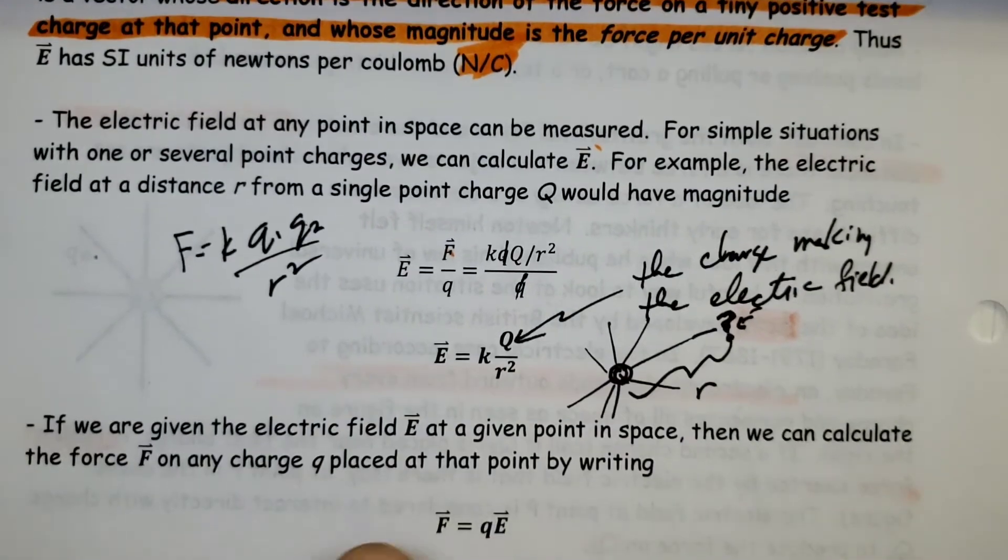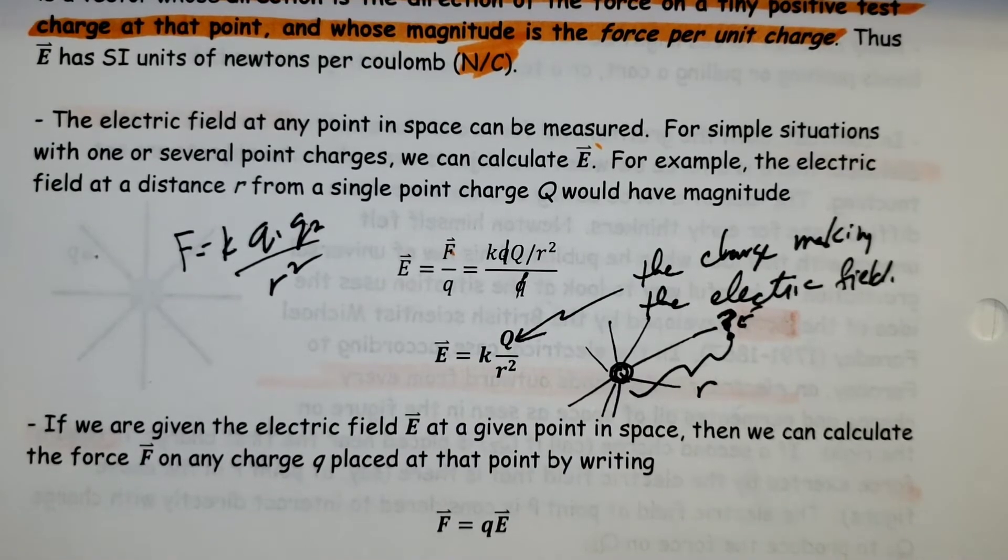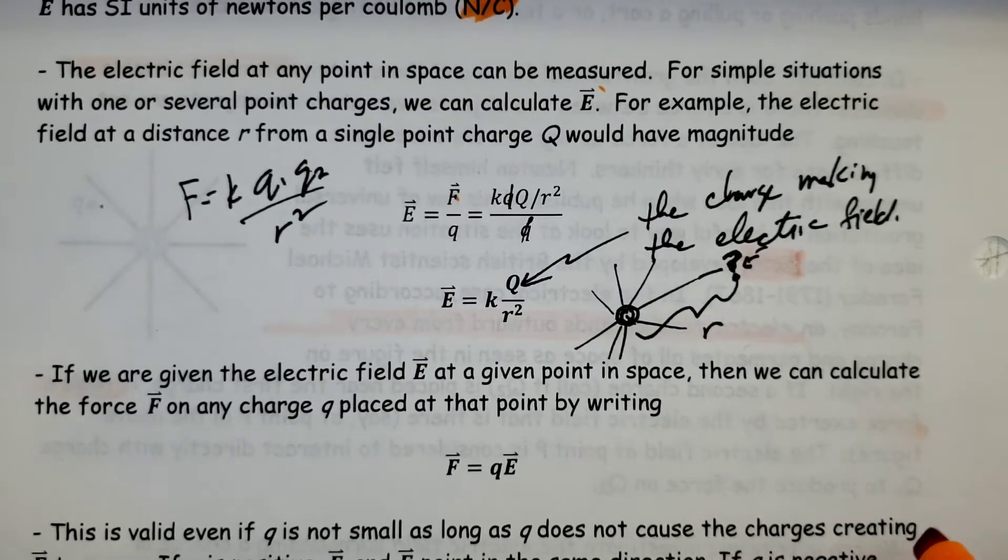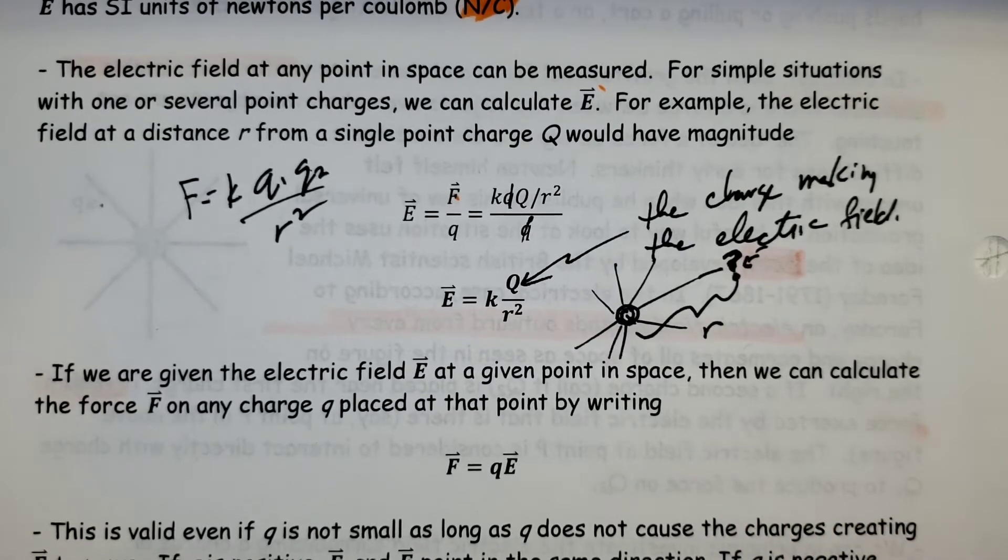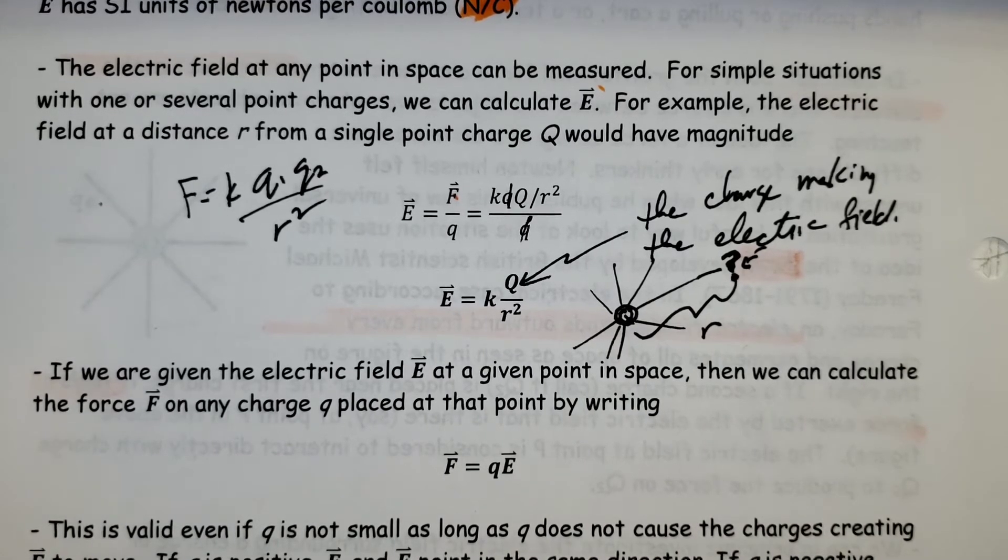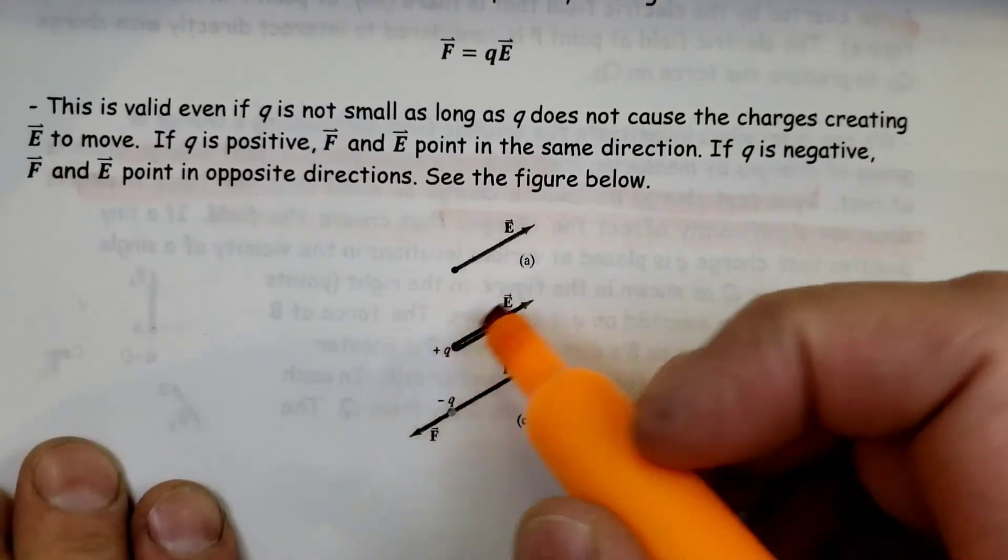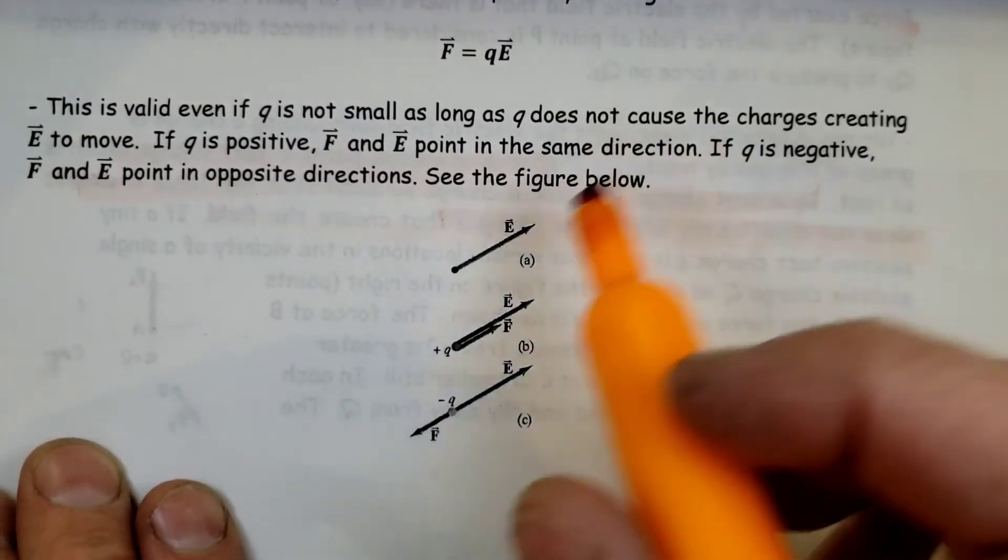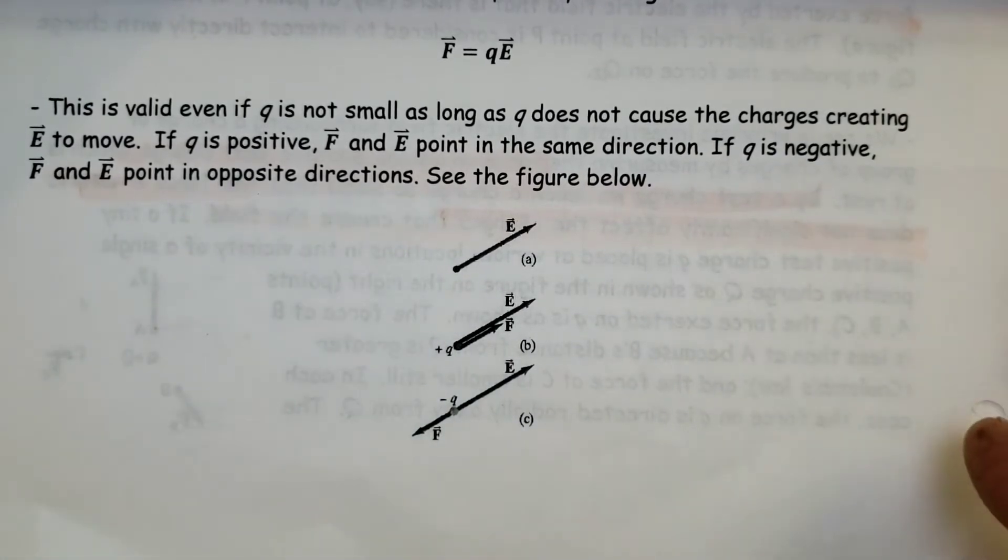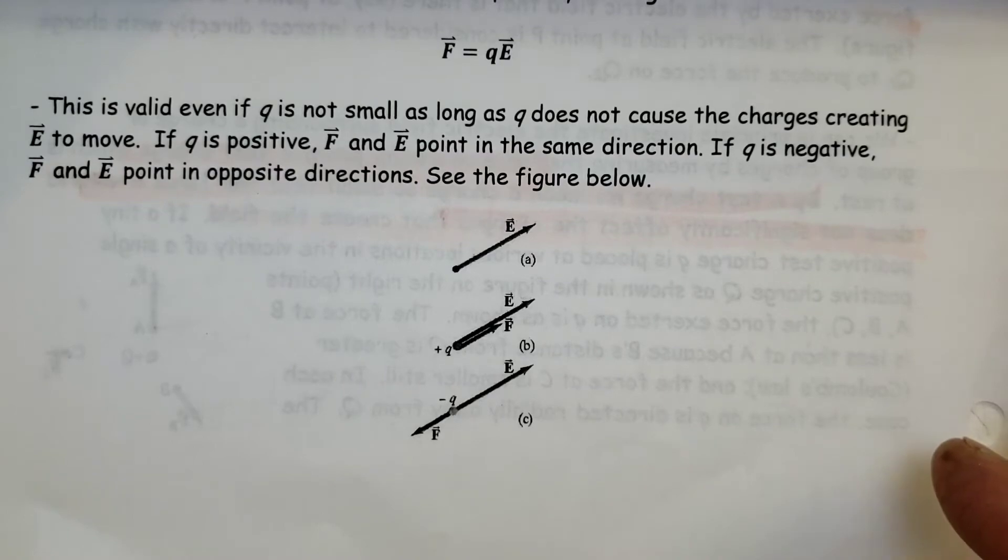If we are given the electric field E at the given point in space, then we could calculate the force. This is valid even if Q is not small, as long as Q does not cause the charges creating the E to move. If Q is positive, F and E point in the same direction. If Q is negative, F and E would be opposite direction. So we have electric field pointing out, and it would be attracted to that if it in fact was negative.